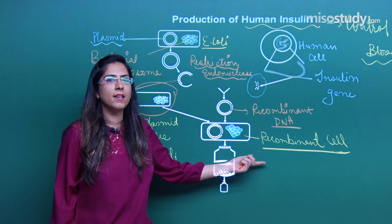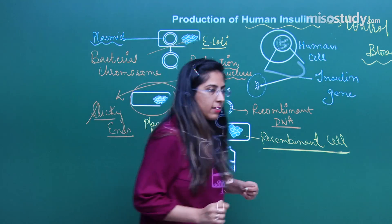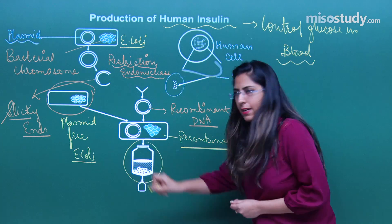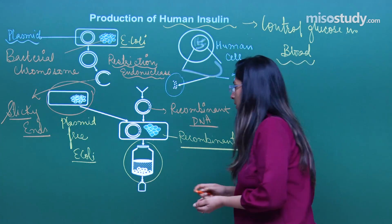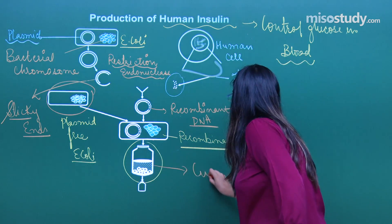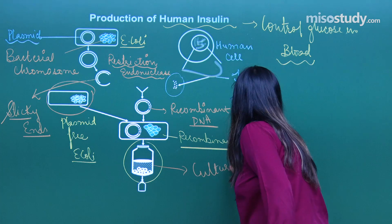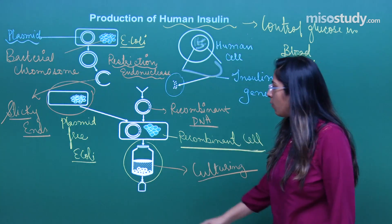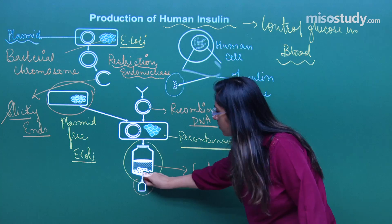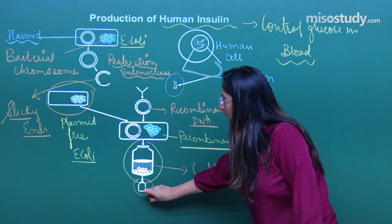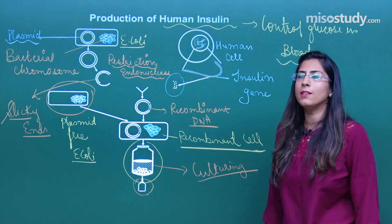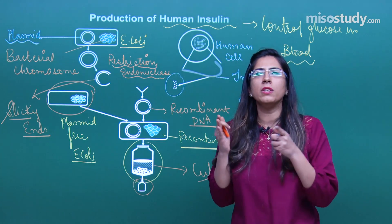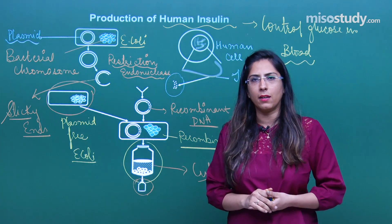Now this cell will be called a recombinant cell. Now what I will do next? I will culture these cells in fermenters. Now the culturing will be done and later on what I will do? I will take out the insulin which is important for us. And this can be introduced into human beings, into those patients who cannot produce insulin, whose insulin is not produced by their pancreas.